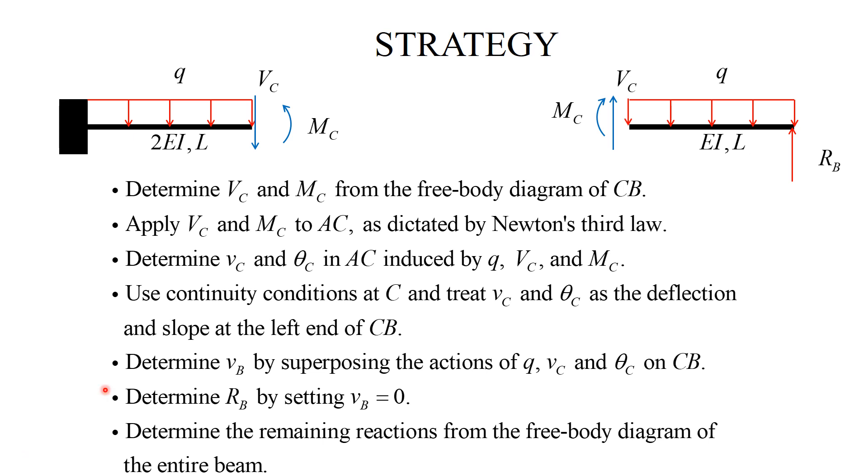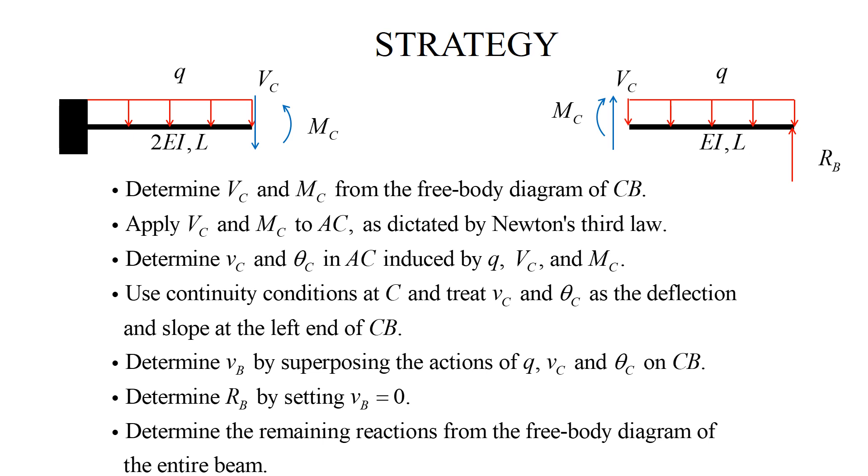Then, I set V sub B equal to zero. This gives me R sub B. And now, I can draw the free-body diagram either of the entire beam or of this beam to determine the reaction forces at A. Let us see how the strategy is implemented.